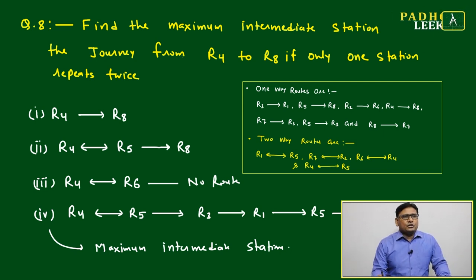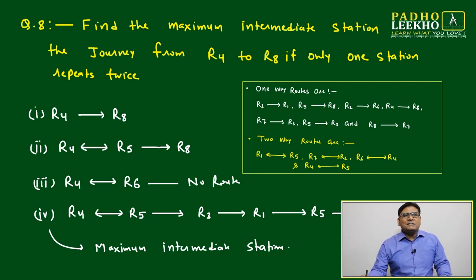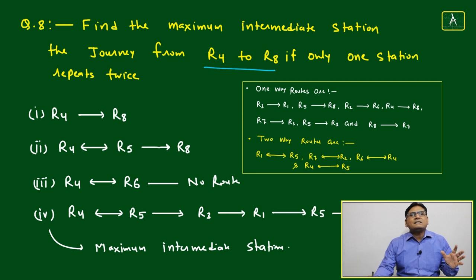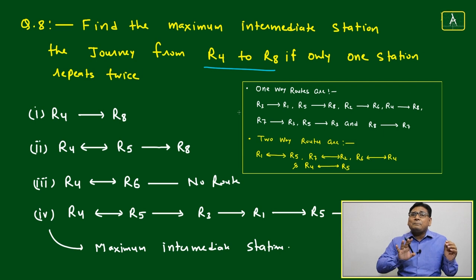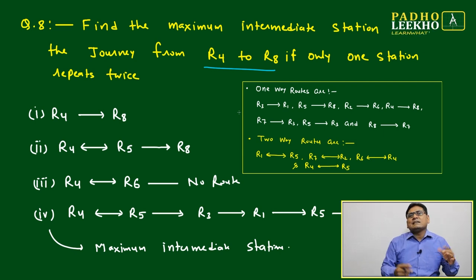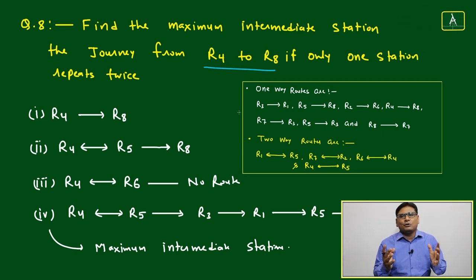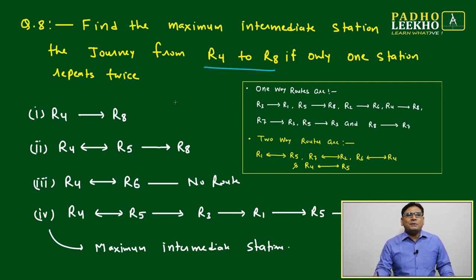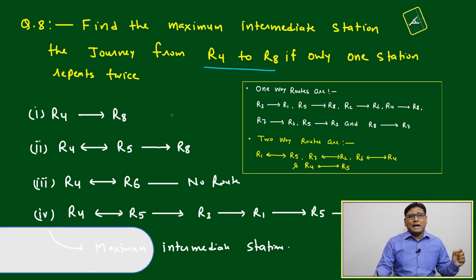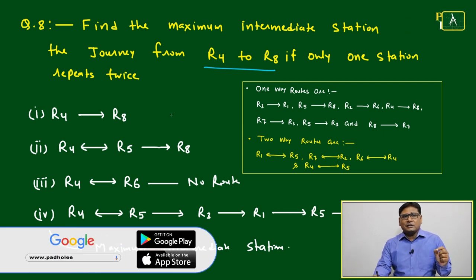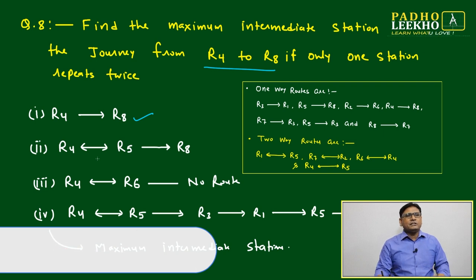Question number eight: find the maximum number of intermediate stations during the journey from R4 to R8, if only one station repeats twice. You can repeat one city, but only twice. First, let's check the routes from R4 to R8. One direct route exists with no intermediate stations.